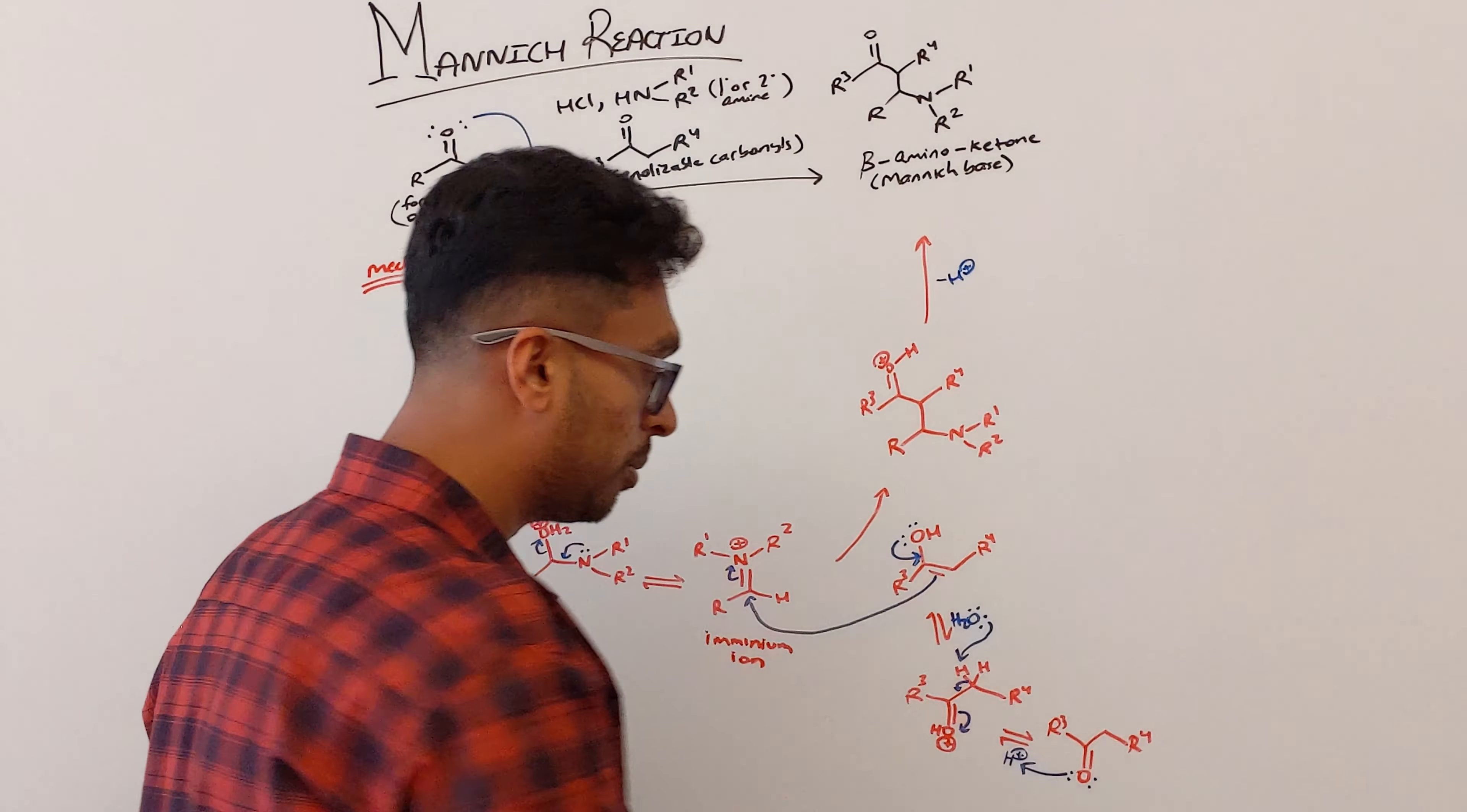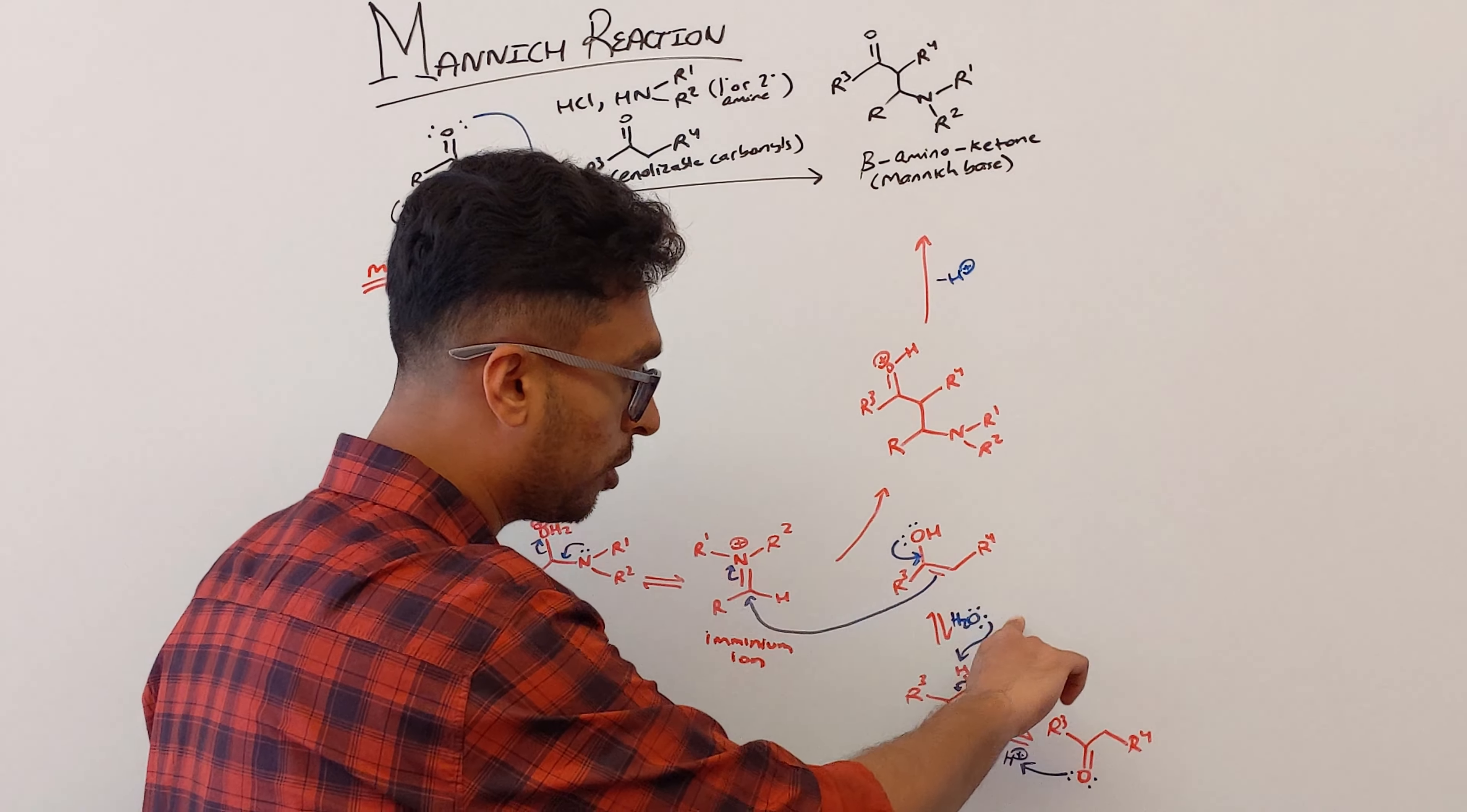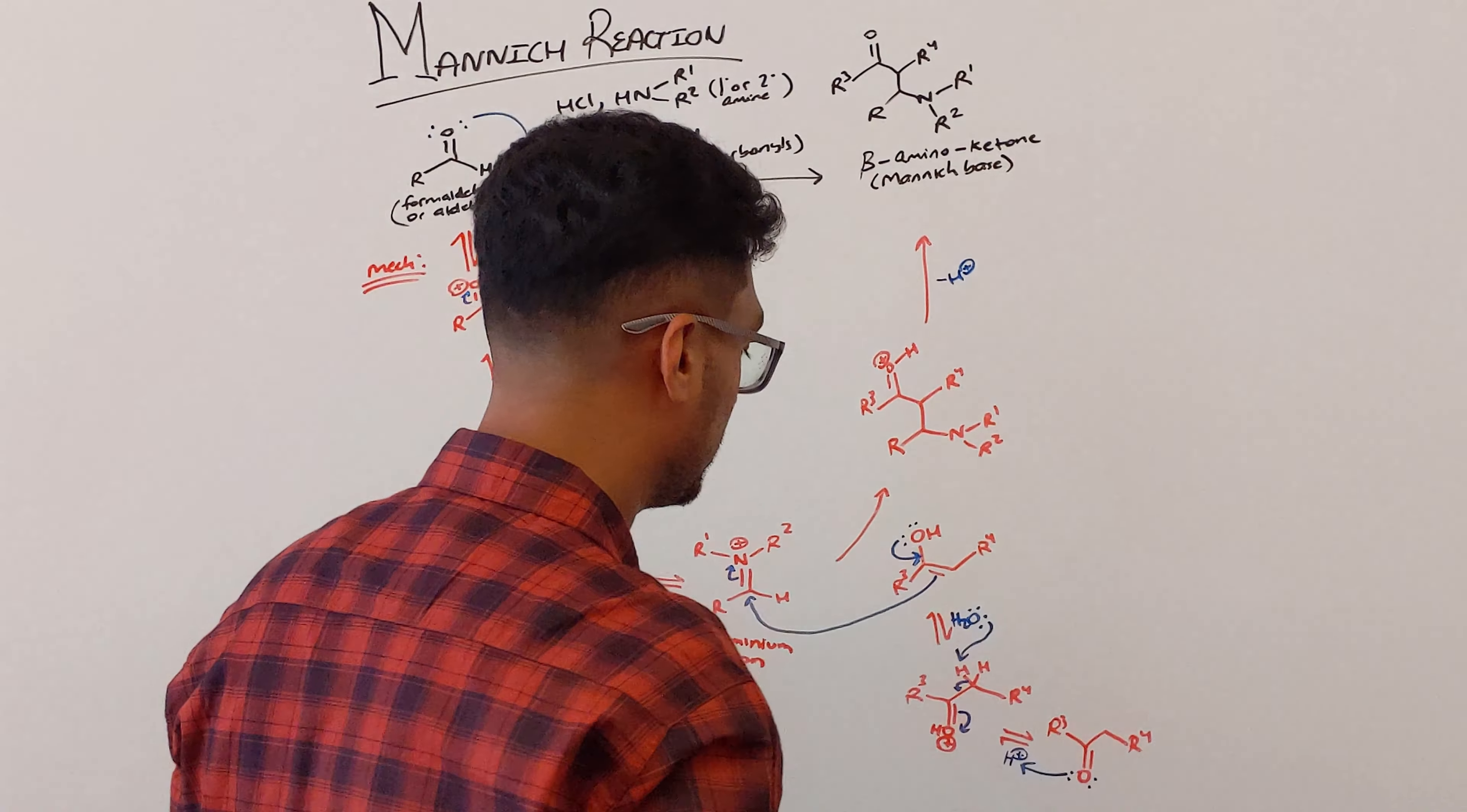We also had that enolizable carbonyl. It's going to do the same thing. It's going to get protonated. Now, instead of having that nucleophilic attack here, you're going to get that water. So water is going to come down, abstract that hydrogen, and now you're going to form this enol. So tautomerization happens.